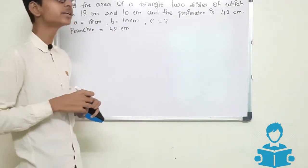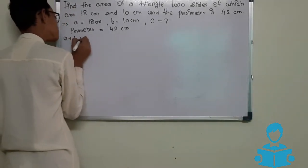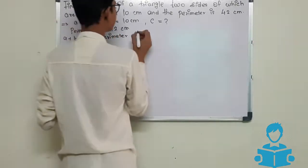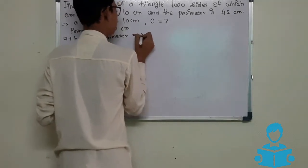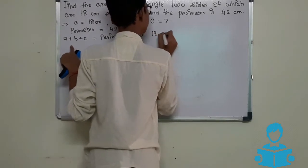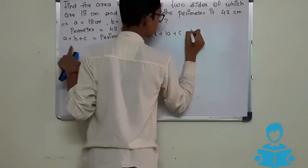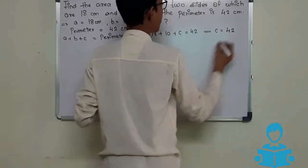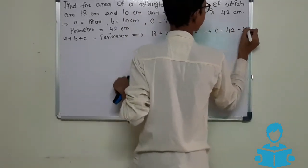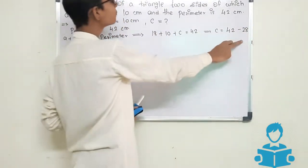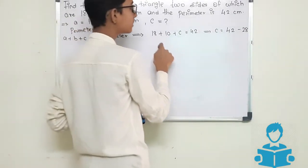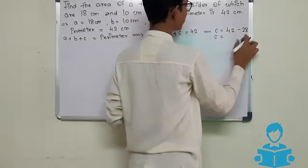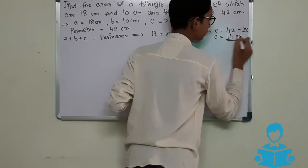Now how will we find the value of c? We know that the sum of all sides equals the perimeter. So we write: a plus b plus c equals perimeter. Putting in the values: 18 plus 10 plus c equals 42, so c equals 42 minus 28. Since 18 plus 10 gives 28, when 28 moves to the other side it is subtracted from 42, giving c equals 14 centimeters.